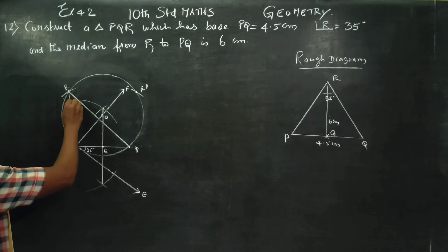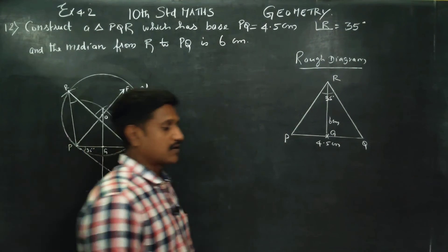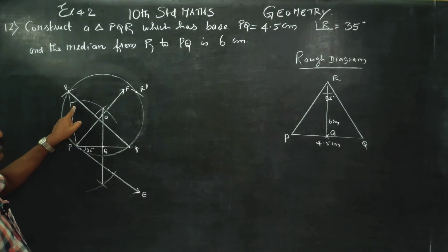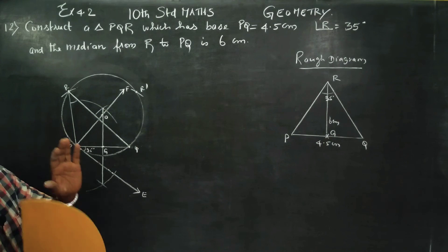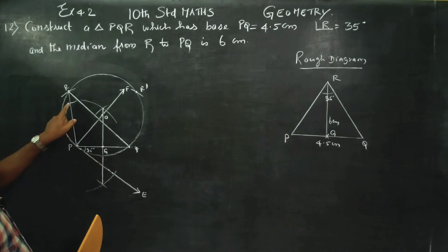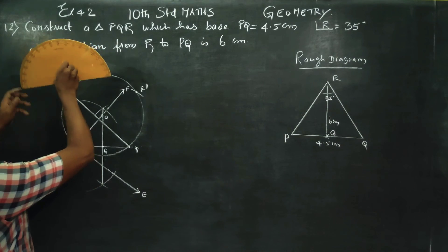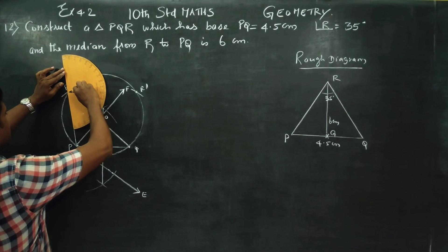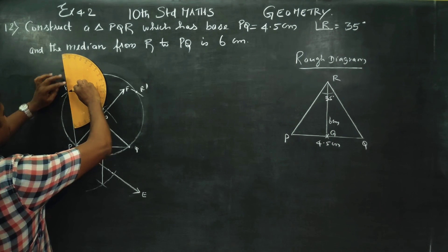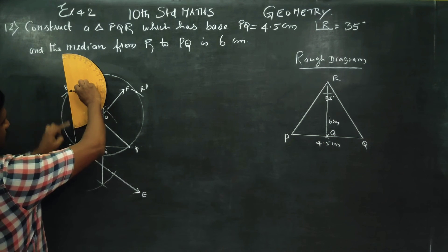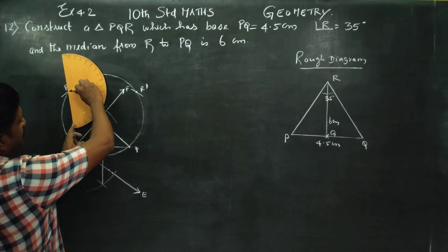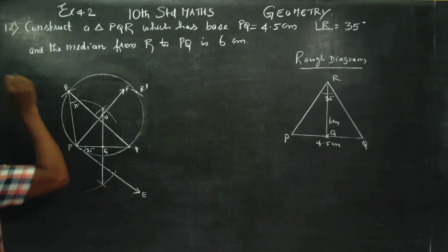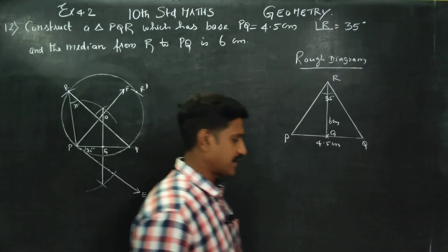You will be getting triangle P, Q, R. Measure the angle using your protractor — place the protractor and move it to check. Read: 10, 20, 30, 35 — if it reads 35 degrees, then you are exactly correct.